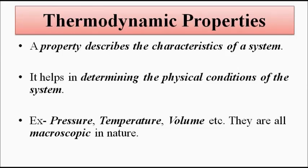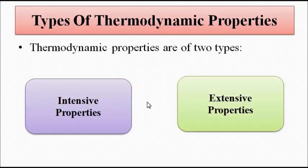Thermodynamic properties describe the state or characteristic of a system. To study any system and its behavior with the surroundings, certain characteristic features are used which give us information about it — these are called thermodynamic properties. The most commonly used thermodynamic properties are pressure, temperature, and volume. There are two types: intensive properties and extensive properties.